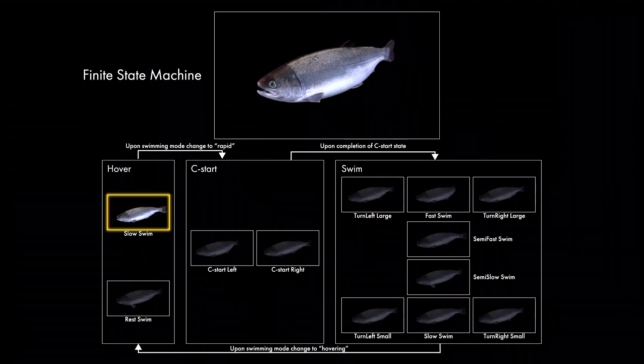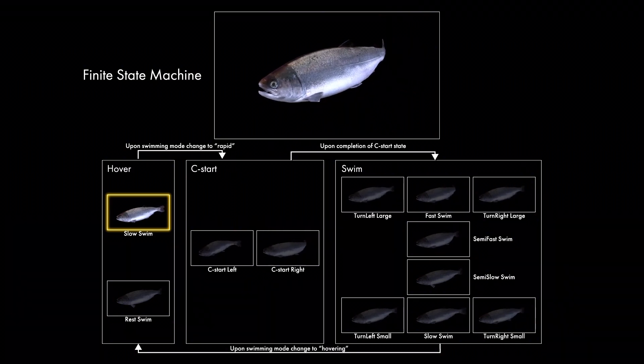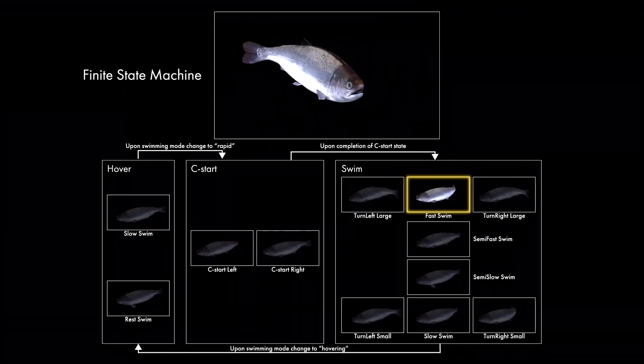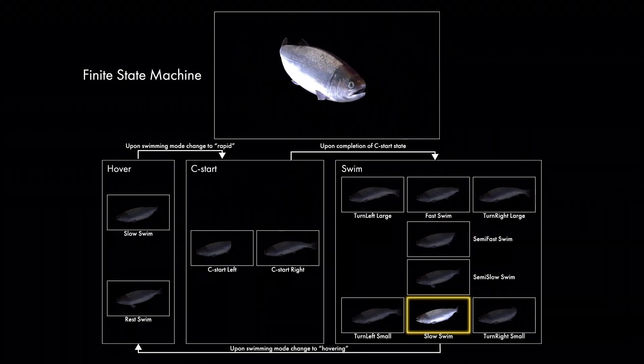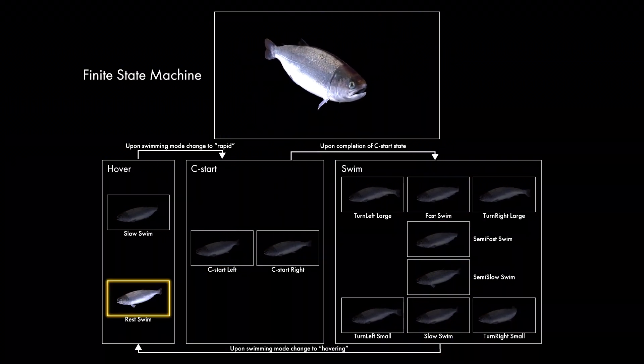Individual fish motion comprises 12 animations based on behavior observed in the recorded data. Animation playback is controlled by a finite state machine. During transitions between states, animations are blended, resulting in smooth motion.